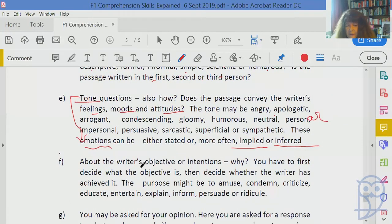What's the writer's objective or intention? Why did he write that? You have to decide what the objective is and decide whether the writer achieved it. Maybe the purpose of the text is to amuse, condemn, criticize, educate, entertain, explain, inform, persuade, or ridicule something. If it's a narrative text from a story, it's really written to entertain the reader. Other types of texts might be to persuade you about something or inform you.